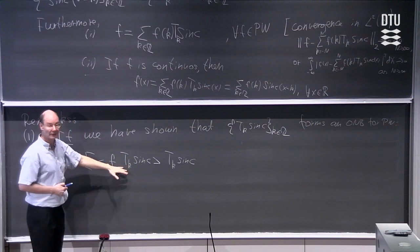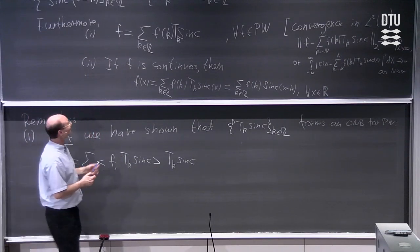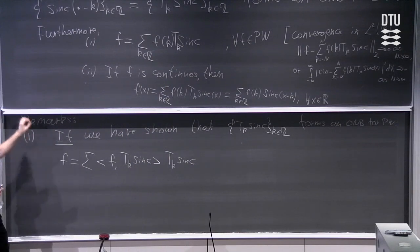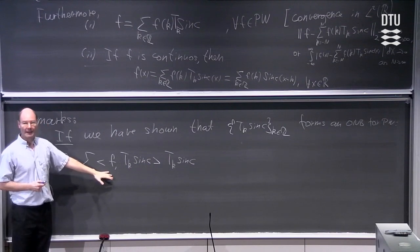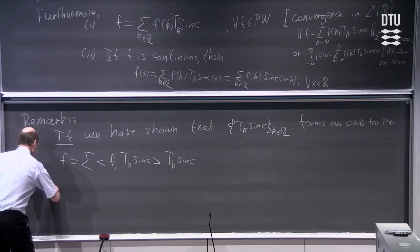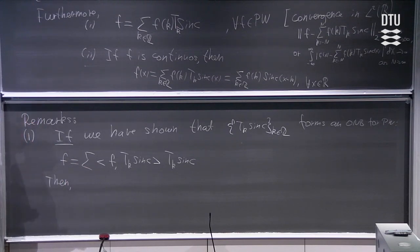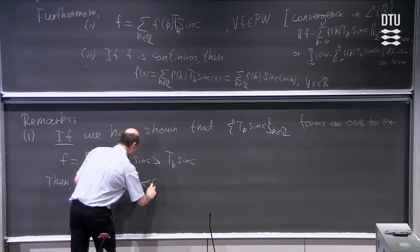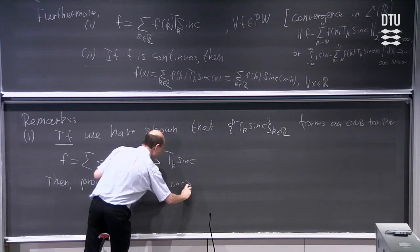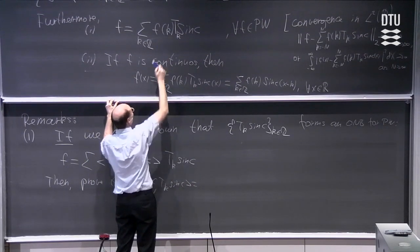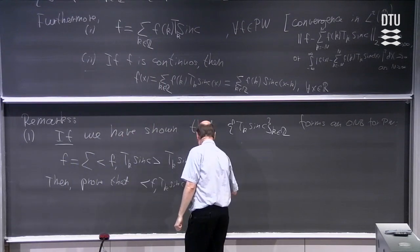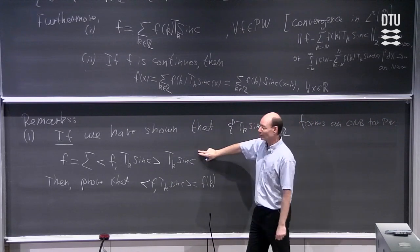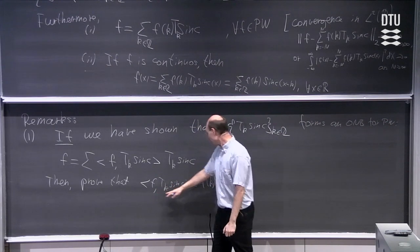What we have from the theorem is not exactly what we want here, because we would have to calculate these inner products, and what we claim is that the coefficients we can use are just given by function values f(k). So what we do is first show the orthonormal basis result, and then in the proof it has to be shown that the inner product coefficients ⟨f, T_k sinc⟩ are exactly equal to the numbers f(k). This is the way the proof goes: show it is an orthonormal basis, relate to our theorem, then show the coefficients are given by function values.